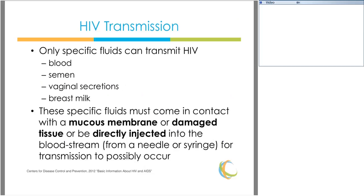Now we're going to talk about how HIV is and is not transmitted. It's important to remember that HIV is only transmitted through certain body fluids — blood, semen, vaginal secretions, and breast milk. These specific fluids must come in contact with a mucous membrane or damaged tissue, or be directly injected into the bloodstream from a needle or syringe, for transmission to possibly occur.